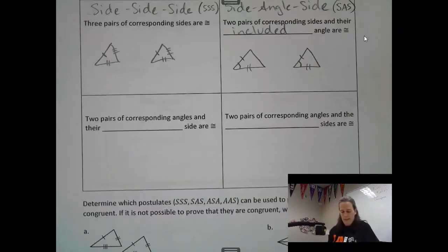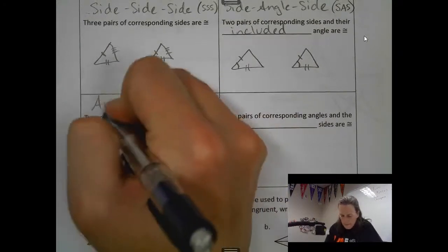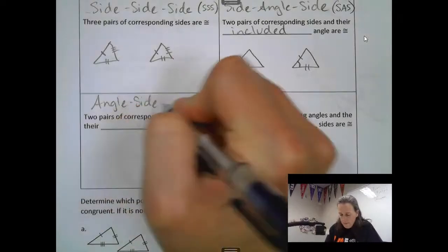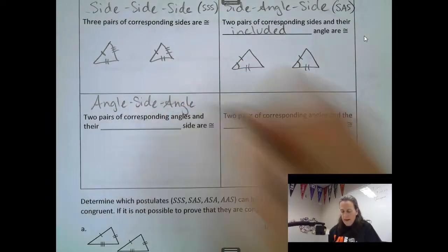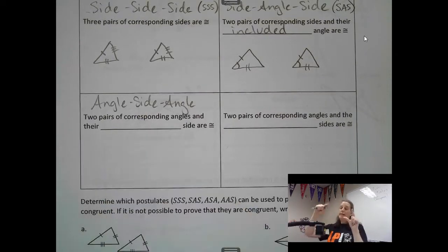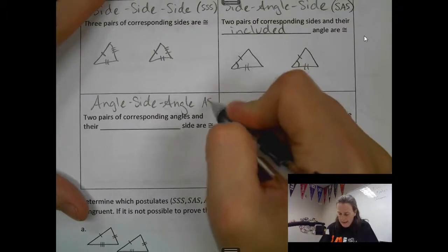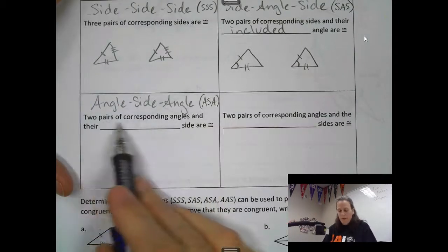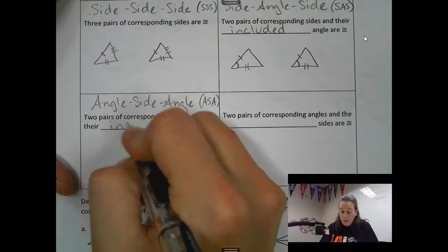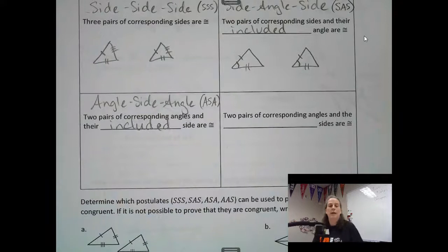This one is Angle-Side-Angle, or ASA. The side is written right in between the two angles — it's got to be the side in between them. So two pairs of corresponding angles and their included side, meaning it's got to be between those two angles to count.